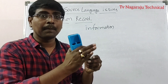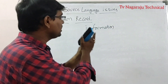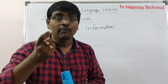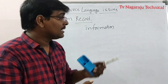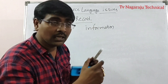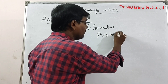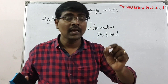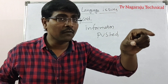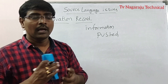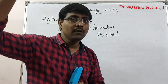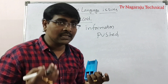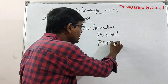The activation record supplies all the information that is needed for execution. Whenever a procedure is called, the activation record of the procedure is pushed into the stack. After completion of the procedure, it returns back to the caller, and the activation record from the stack is popped.